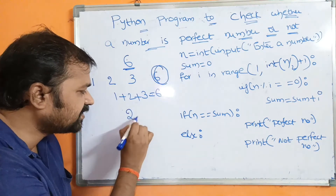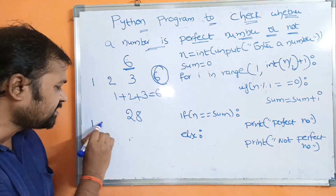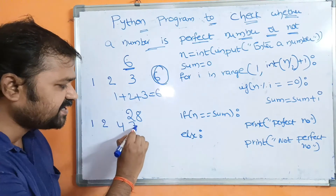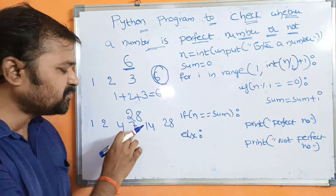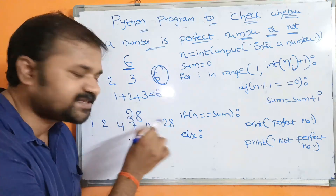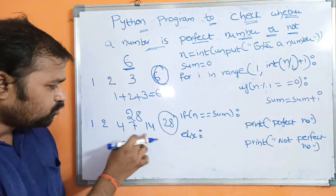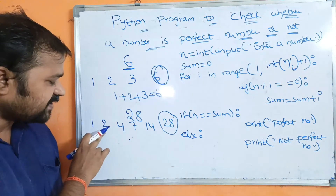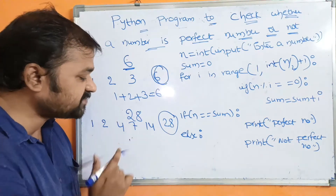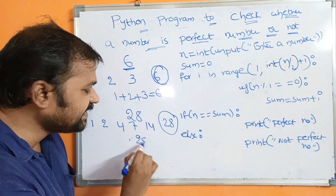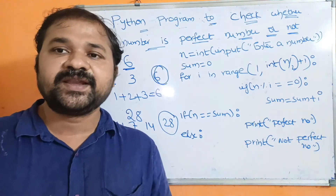Likewise, 28 is also a perfect number. The factors for 28 are 1, 2, 4, 7, 14, 28 — but we should not consider 28 itself. If we add 1+2+4+7+14, we get: 1+2=3, 3+4=7, 7+7=14, 14+14=28. So 28 equals the given number, which is why 28 is a perfect number.